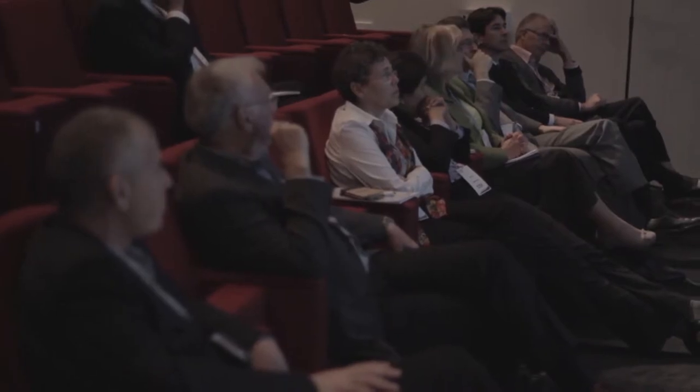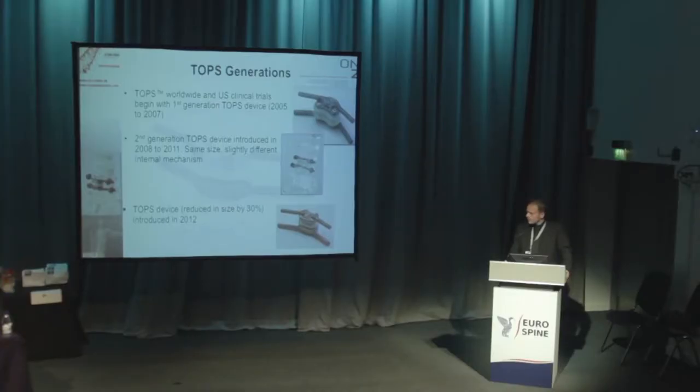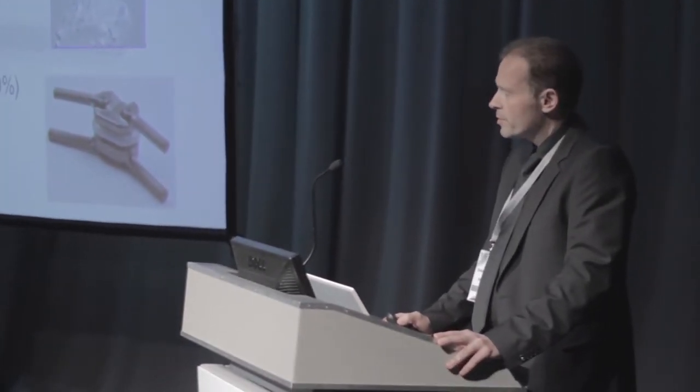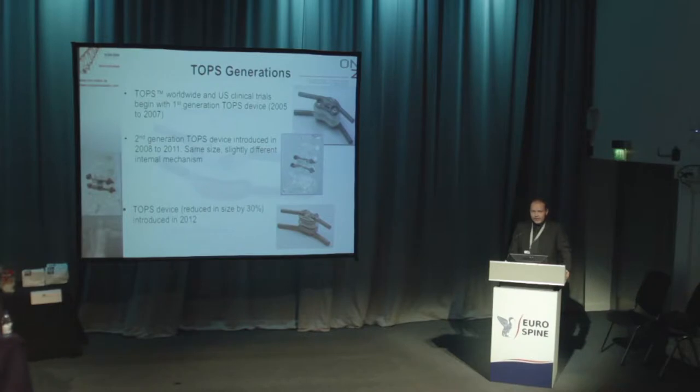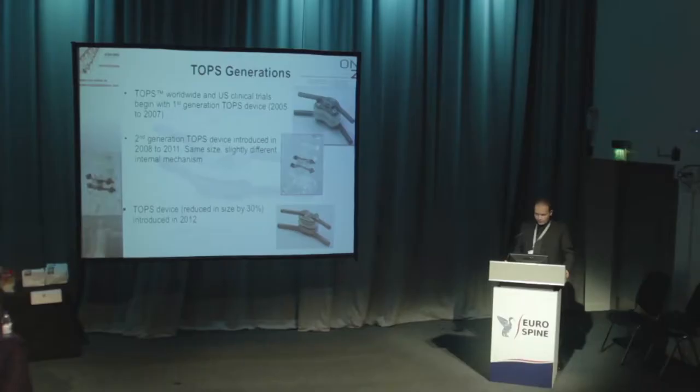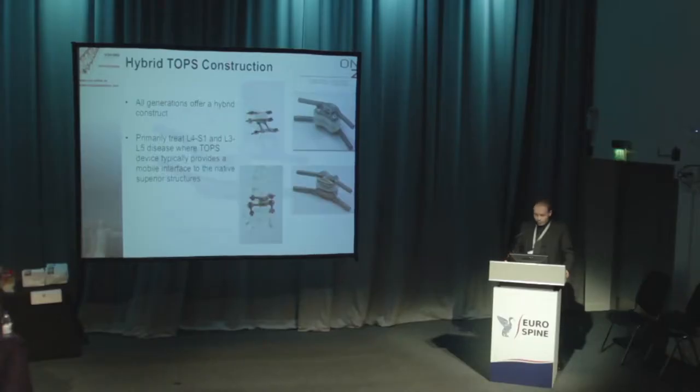The big advantage is that this device today is smaller, so a total laminectomy is not still necessary. From our point of view, we let the lamina in place, so it's not necessary to remove normal anatomical structures. It's only necessary to remove the processus spinosus and the interspinous ligament. From our point of view, that's very good.